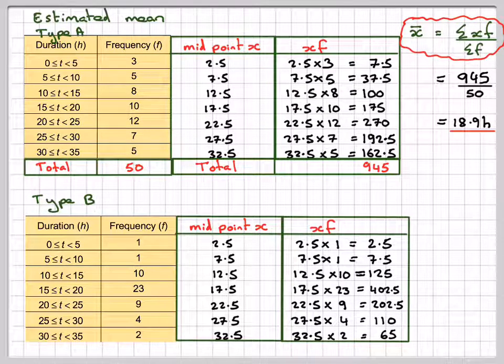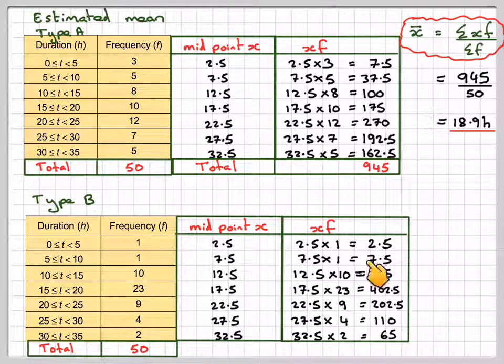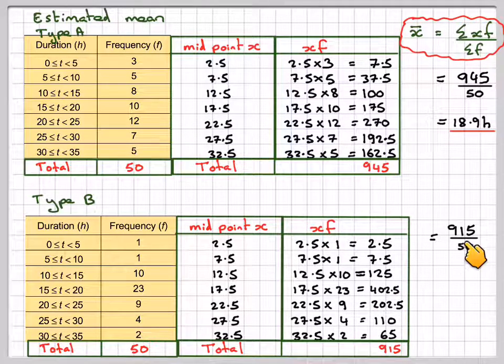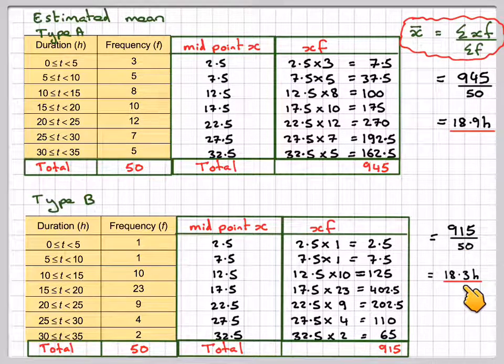Again, taking the sum of this one, which is 50, and then summing up this one, we get 915. And then using this formula again, we're going to get 915 divided by 50, which is equal to 18.3 hours. So, the mean of this one was actually slightly less than this one.